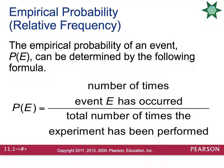The empirical probability of an event is going to be denoted as P of E. And it can be determined by taking the number of times that event E has occurred divided by the total number of times the experiment has been performed.